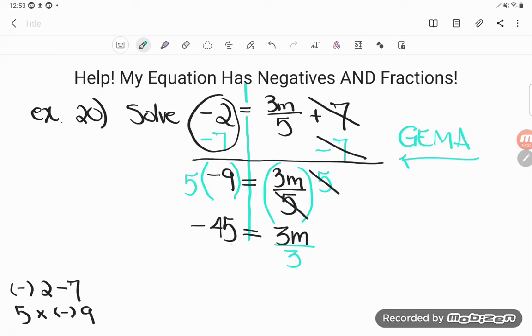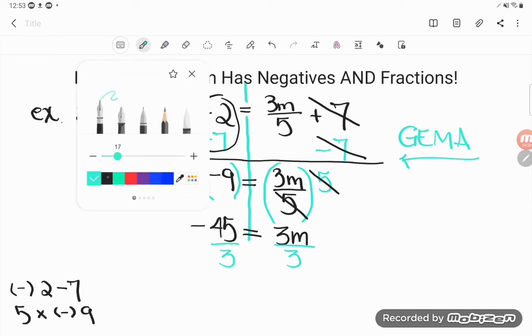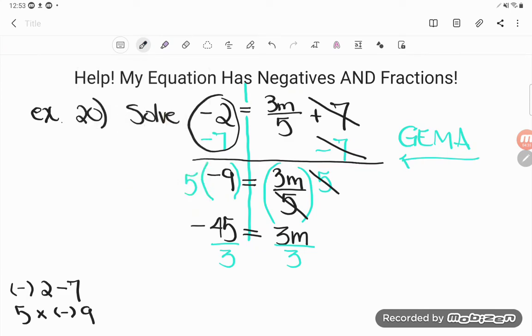Now again, you can do whatever you want as long as you do it to both sides. So I'll hop across the equal sign. Divide by 3 on that side as well. And again, use your calculator if you want to. You're going to use the negative key down by enter. 45 divided by 3. The calculator will tell you that's negative 15.